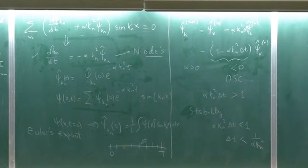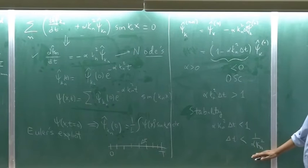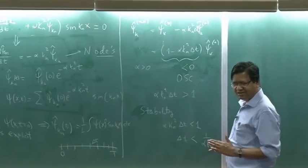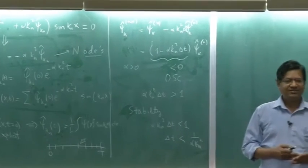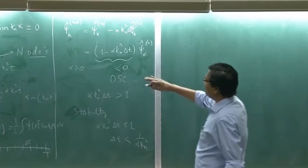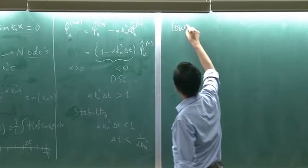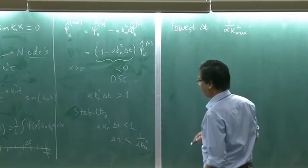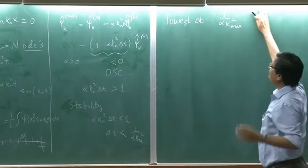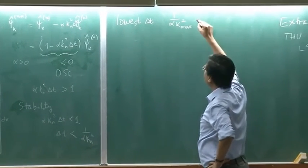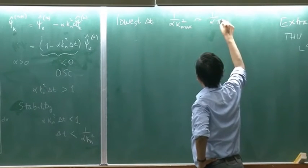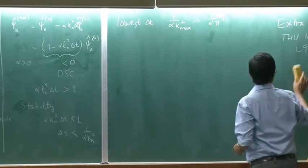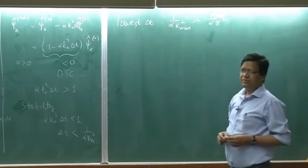This is critical. When you do a project, you have to keep this in mind. Now, what is k_n? k_n is a set. Look for every k_n, I have a delta t. What is the worst delta t? The lowest delta t. Every equation has a delta t correspondingly. Lowest delta t will be 1/(alpha k_max²). That will be 1/(π²/lambda_min²).